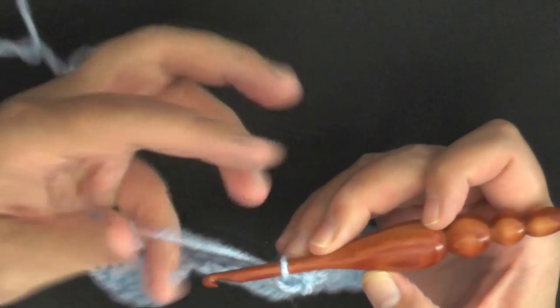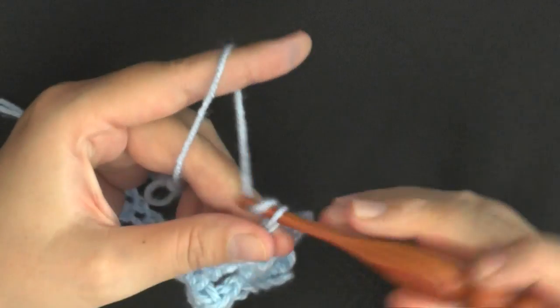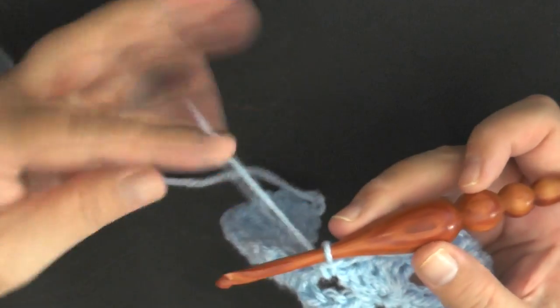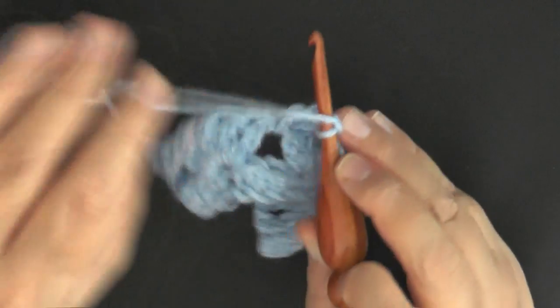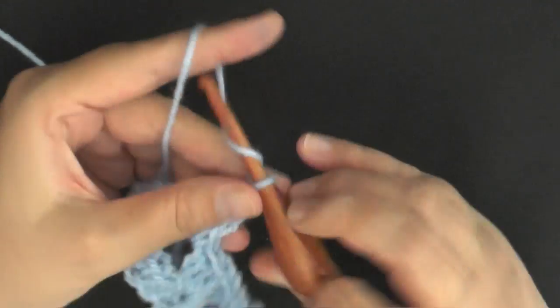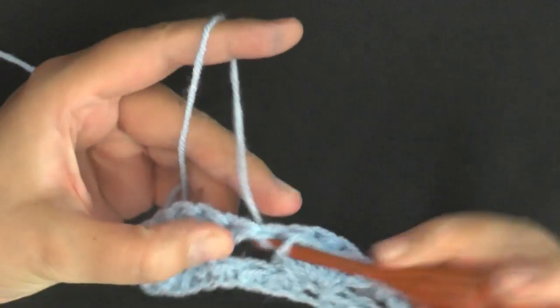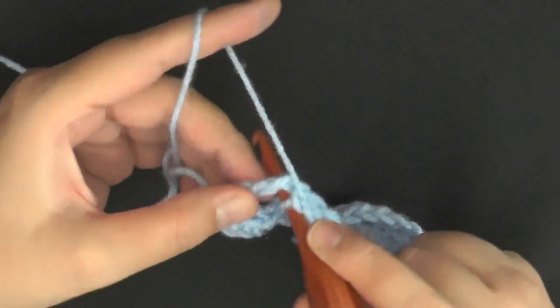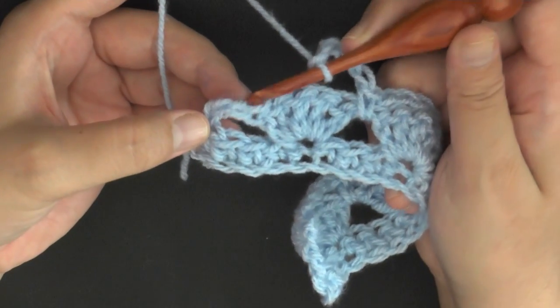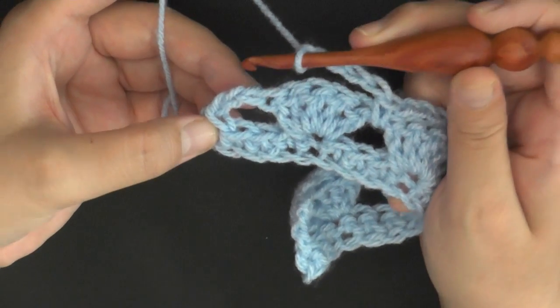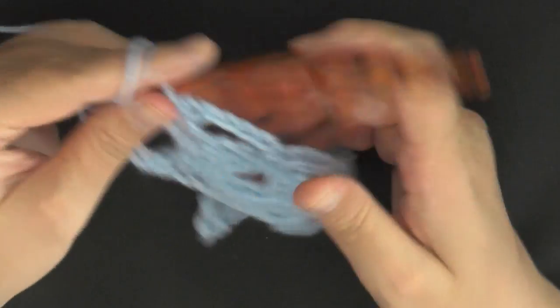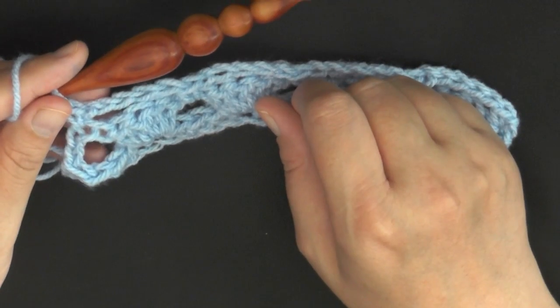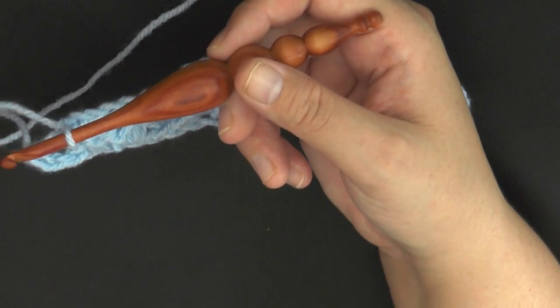And then you will repeat that for the row: chain five and then single crochet in the next big space. It's super fast and super easy as long as your yarn doesn't bunch up on you. Chain five. This last one here, you won't be single crochet into the space, you'll be single crochet into the top of the chain three to end your row, and that ends row three.